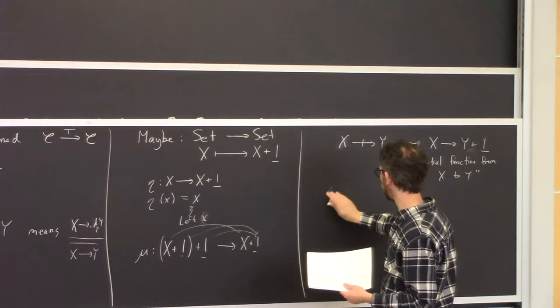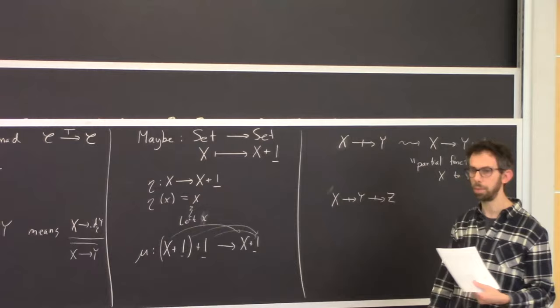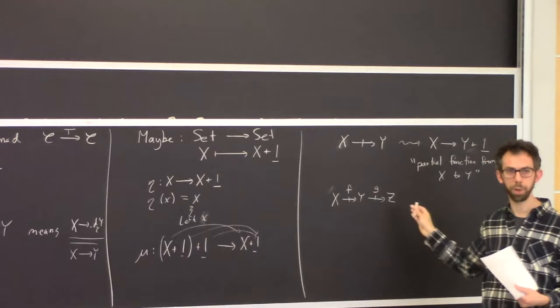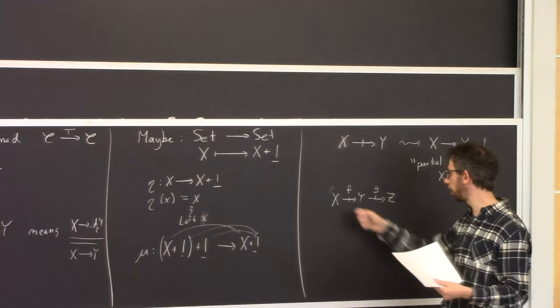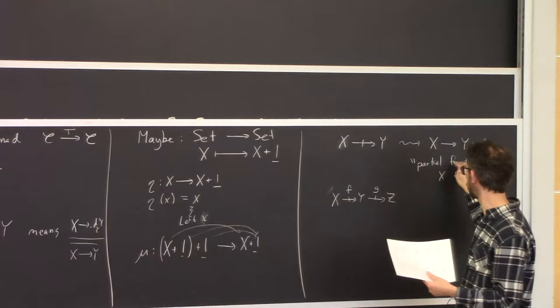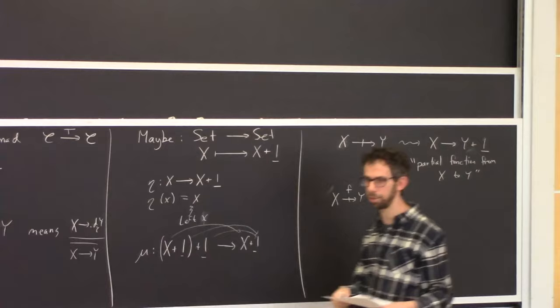To check this interpretation is right, if I have a map from X to Y and a map from Y to Z — both thought of as partial functions — when I compose them, I should get a sensible partial function. Why don't you turn to a neighbor and try to understand what this composition will be and whether it feels right with respect to the interpretation of these as partial functions.